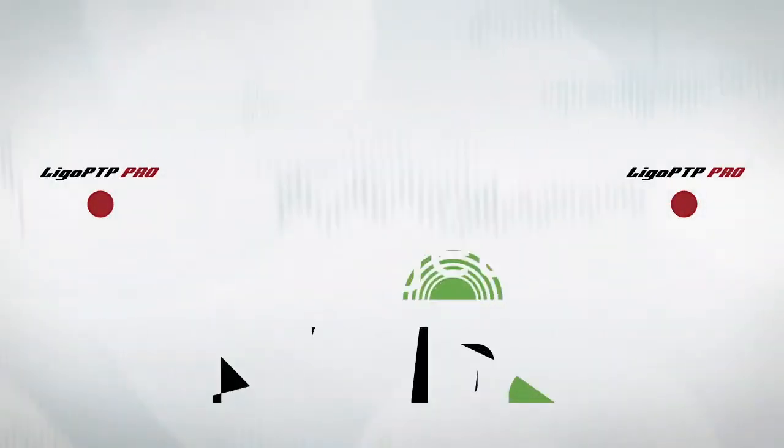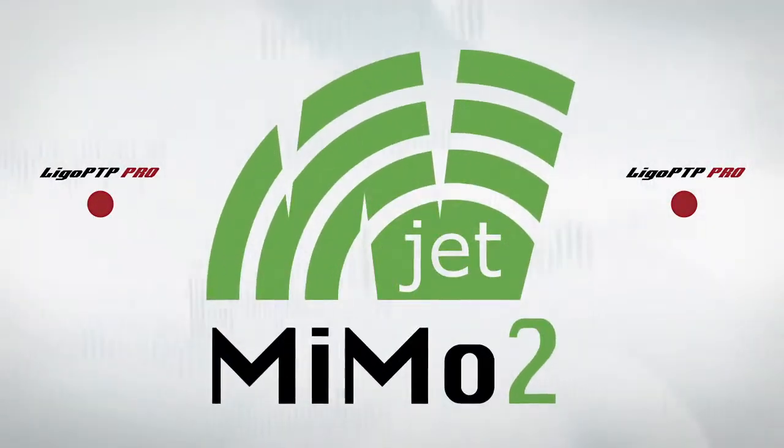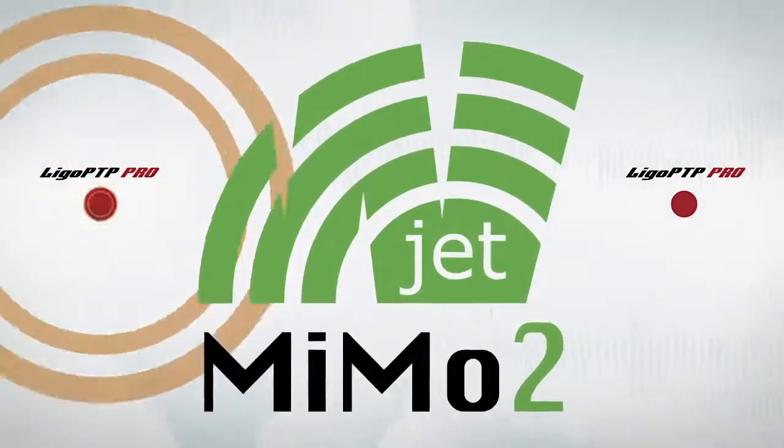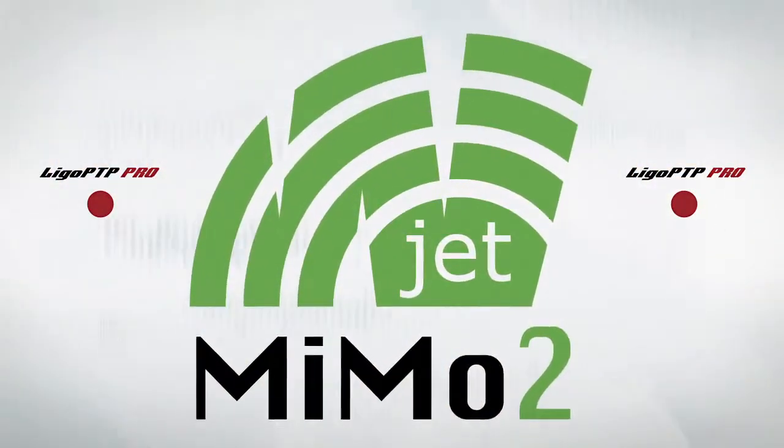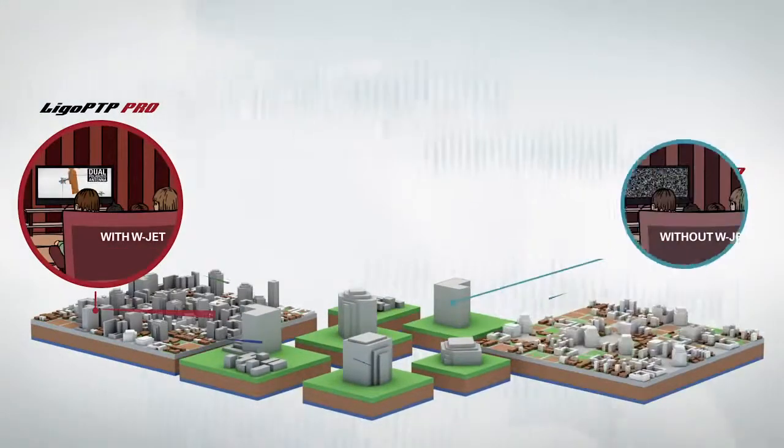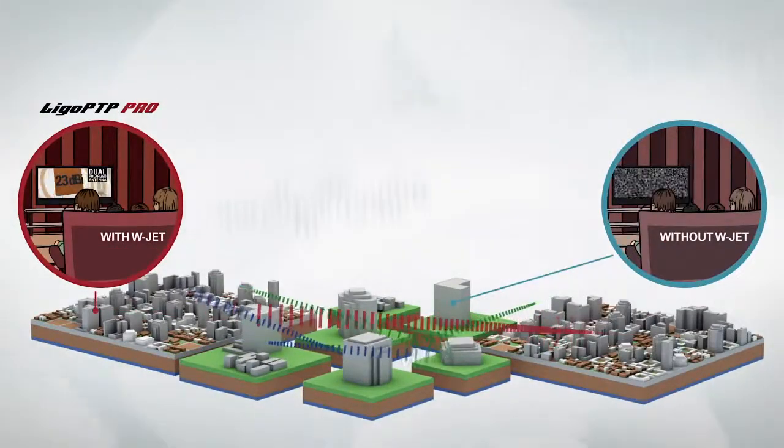For data transmission LIGO PTP PRO devices use our proprietary WJET2 protocol, which was designed specifically for point-to-point applications. WJET2 protocol allows stable operation of the link even in areas with a lot of interference.